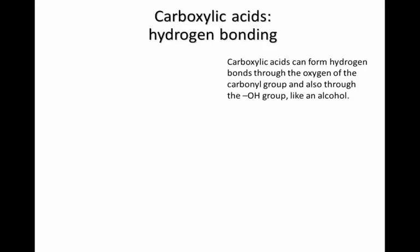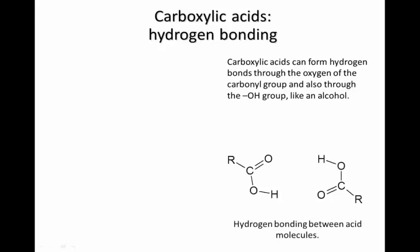The acid functional group is able to form hydrogen bonds both through the OH group, like an alcohol, and through the carbonyl oxygen, like a ketone or an aldehyde. So in liquid carboxylic acids, this means that the molecules can orient themselves in pairs, forming two hydrogen bonds that bind the pair together.